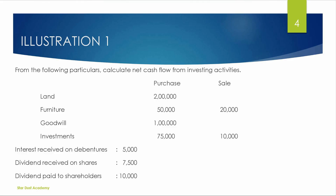Let's work through an example. We are purchasing land for 2 lakhs — keep it as a negative figure. We are purchasing furniture for 2 lakhs, and purchasing goodwill for 1 lakh. Investment: 75,000 purchase and 10,000 sale — we will separate these. Interest received on debentures. Dividend received on shares is 7,500.